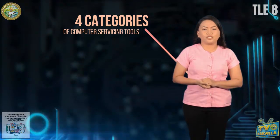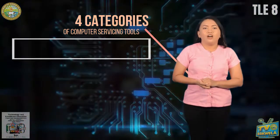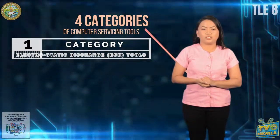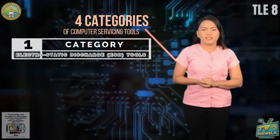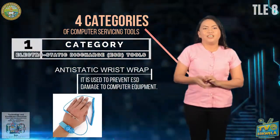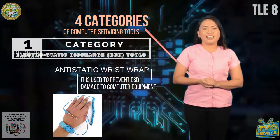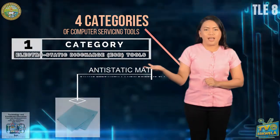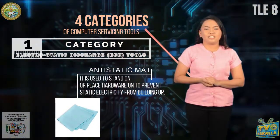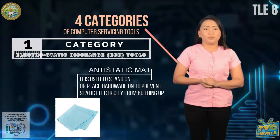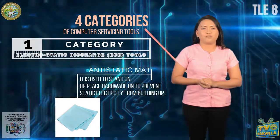There are four categories of computer servicing tools. The first is the Electrostatic Discharge or ESD tools. Examples are: Antistatic wrist strap — used to prevent ESD damage to computer equipment. Antistatic mat — used to stand on or place hardware on to prevent static electricity from building up.